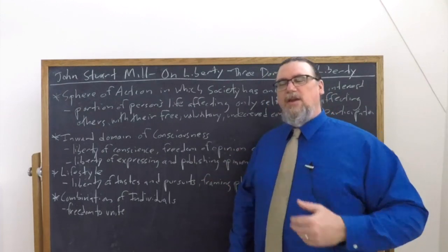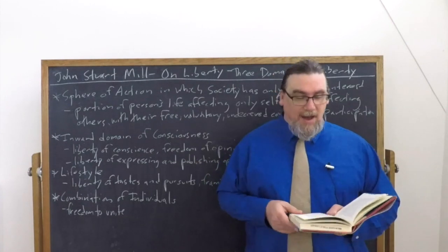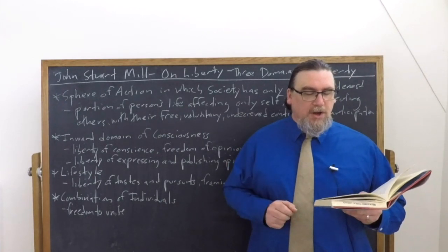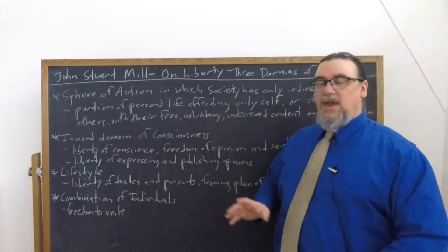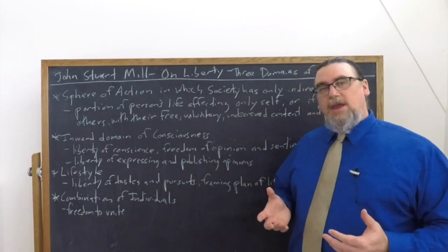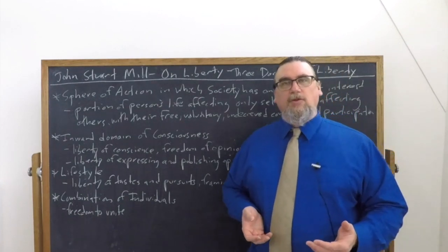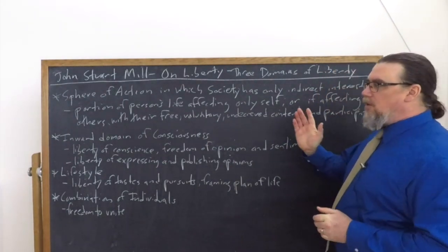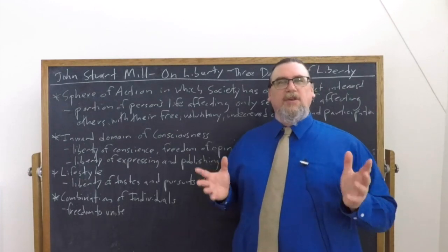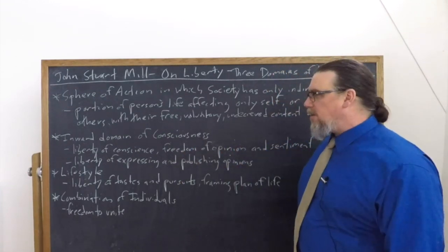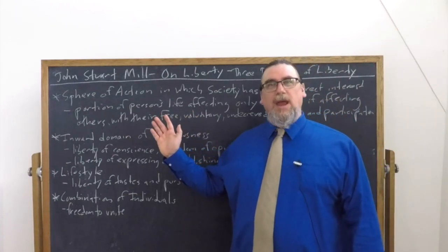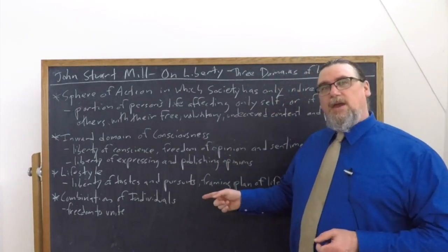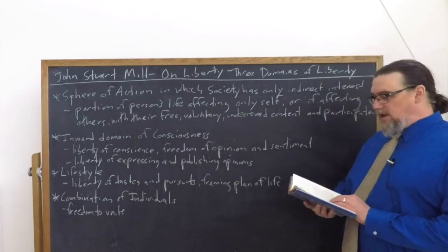He says this is the appropriate region of human liberty, all of this sphere of action. Then he breaks it down into three different domains which are going to be discussed through the rest of the work in considerable detail. There is the inward domain of consciousness, we could call this freedom of thought. Then there's the entire domain of what we can call today lifestyle. And then finally, what he calls combination of individuals. So we should look at each of these in turn.